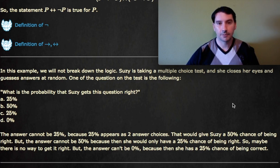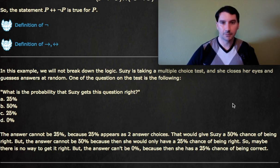What is the probability that Susie gets this question right? A. 25%, B. 50%, C. 25%, or D. 0%. Well, usually you'd guess maybe 25%, because there's four answer choices, and she has a one out of four chance of getting any one of them.